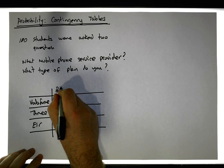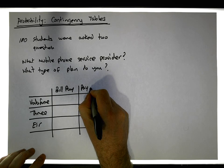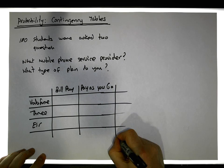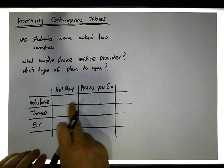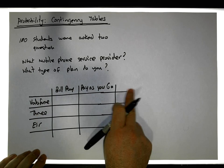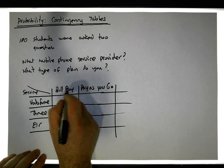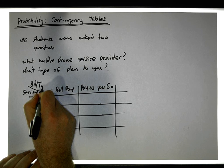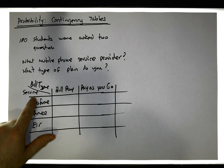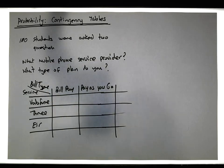I also want to know what type of plan they have — in other words, are they bill pay customers, or are they pay as you go customers? So every person gives us two answers: the service provider listed down the column, and the billing type across the row. We have two categorical variables, and this type of table is known as a contingency table.